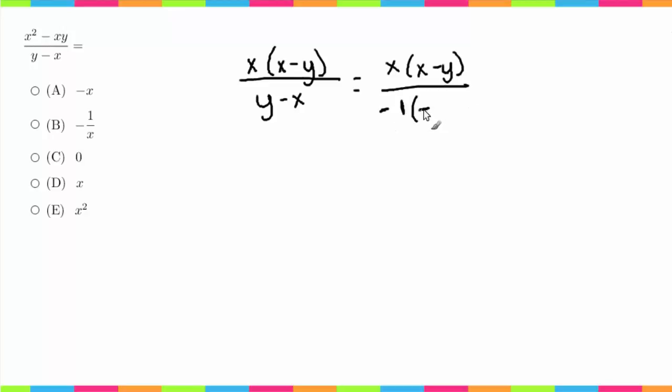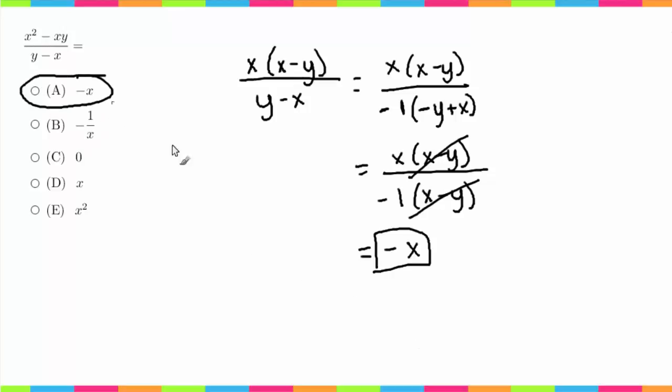So negative 1 times (x minus y). Now we have this same term here, so we can simply cancel that out, and we are left with negative x. So that would be answer choice A. Hopefully that was helpful.